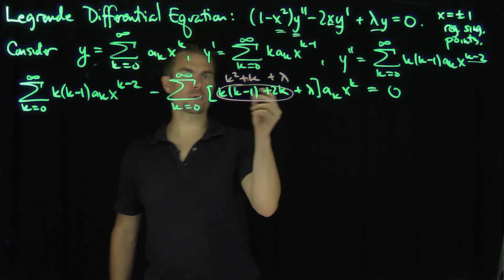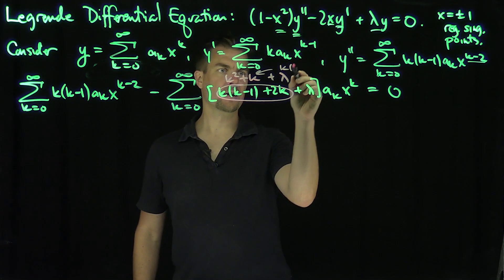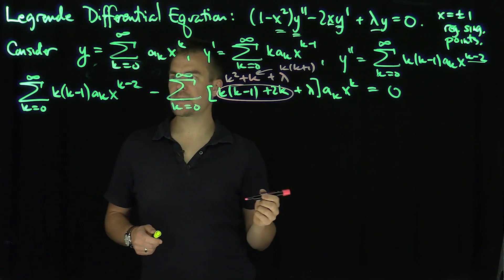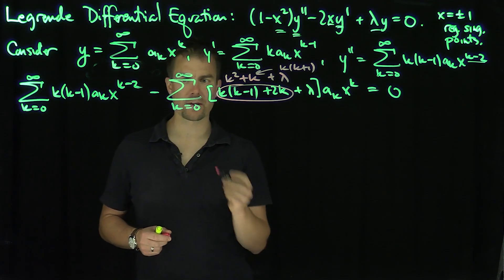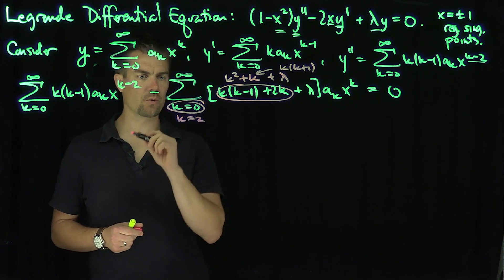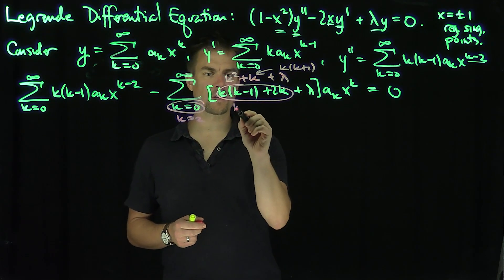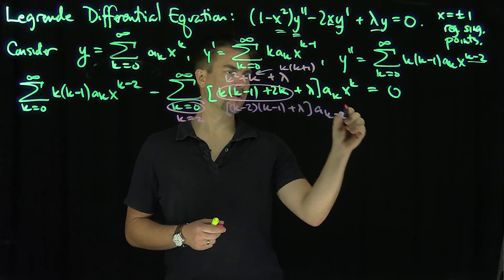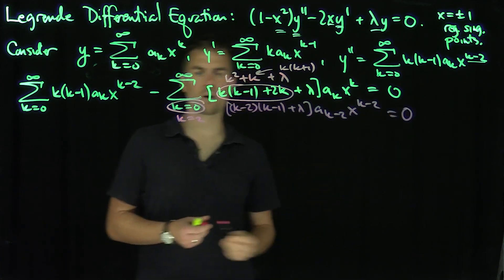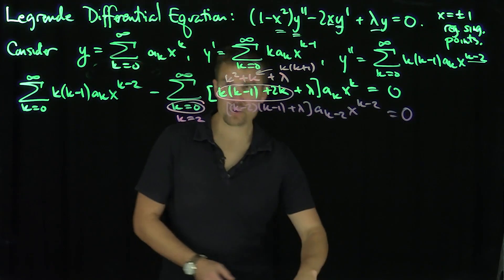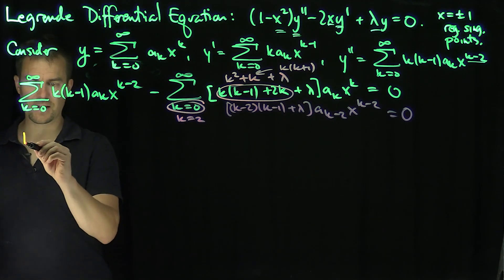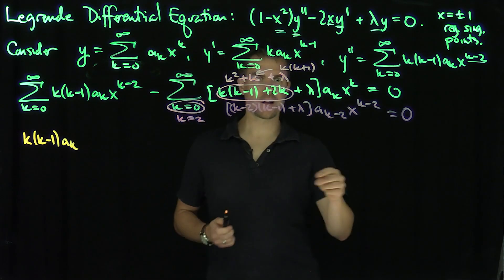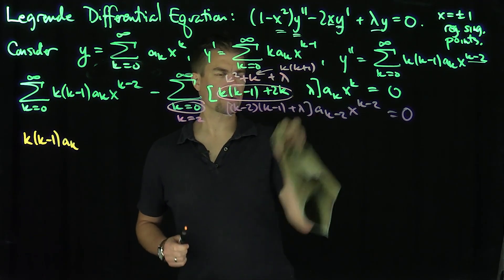I'm going to shift the index of summation down by two units, turning k into k-2 throughout. After the index shift, the recursion becomes: k(k-1)·a_k combined with (k-2)(k-1) - λ times a_{k-2}, with lambda now carrying a negative sign because we pulled out the negative sign.